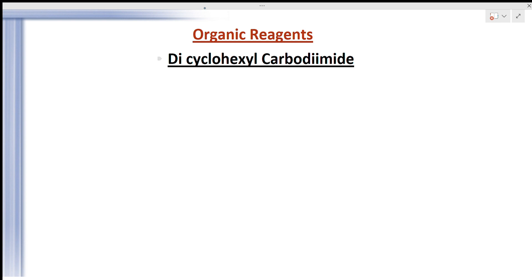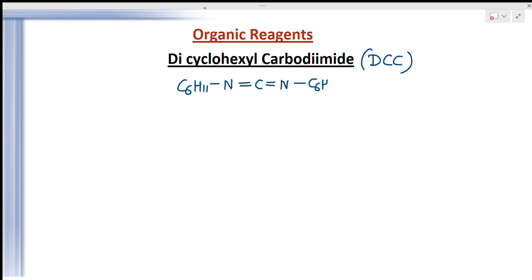Dicyclohexyl carbodiimide is generally known as DCC, and its formula is C6H11-N=C=N-C6H11. In short we abbreviate it as DCC. First of all, let's see its preparation.